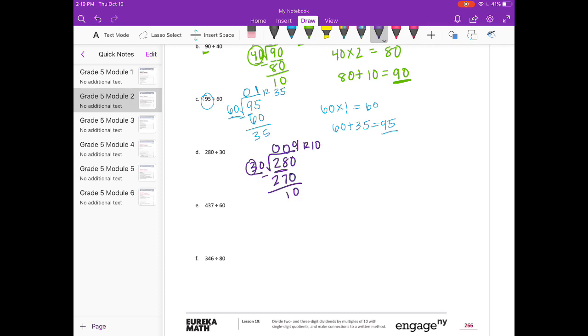And then our check is 30 times 9 equals 270. 270 plus 10, our remainder, is 280. So that works.